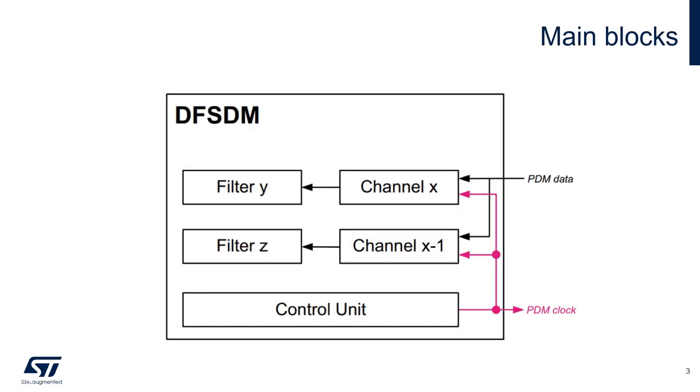The peripheral is composed of three main parts. We have the channels which are responsible for data acquisition. Each channel can acquire data from a PDM line on a single edge of the clock, either rising or falling.